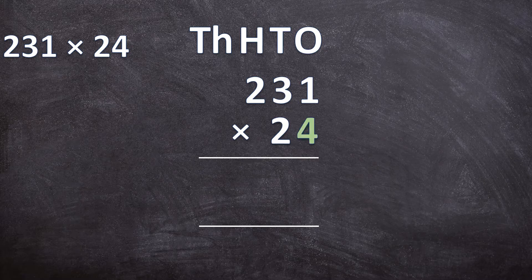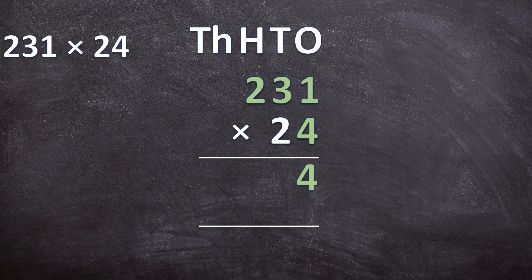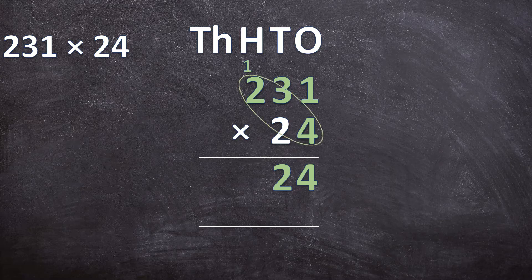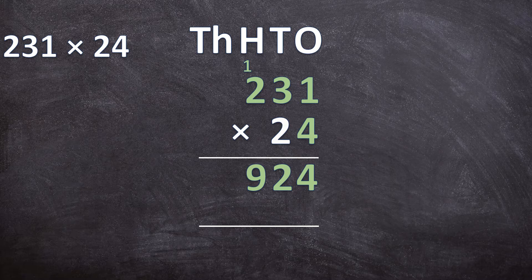Let's do this example together. First we're going to multiply with the 4, so 4 times 231. We start with the ones: 1 times 4 is 4. Next, multiply the 4 with the 3: 3 times 4 is 12, so you write your 2 and carry over the 1. Lastly, multiply the 4 with the 2: 2 times 4 is 8, but remember you carried over that 1, so 8 plus 1 is 9. So 4 times 231 is 924.